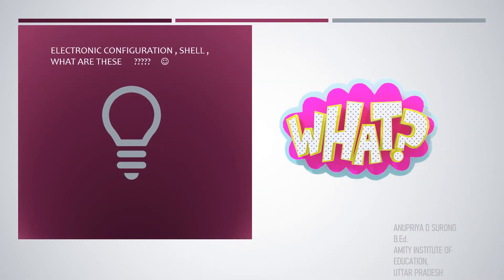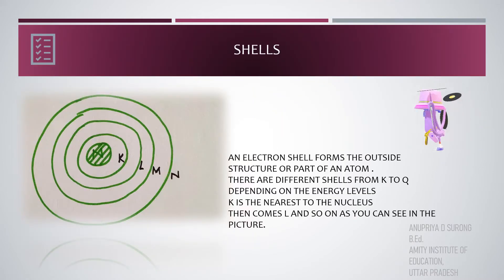Electronic configuration. Shell. What are these? Students, as you can see in the picture that I've drawn, N is the nucleus of an atom and surrounding the nucleus, there are different shells, K, L, M, N, where electrons are arranged or distributed. Therefore, an electron shell forms the outside structure or part of every atom. There are different shells from K to Q, depending on the energy levels. K is the nearest to the nucleus, then comes L, and so on, as you can see in the picture.